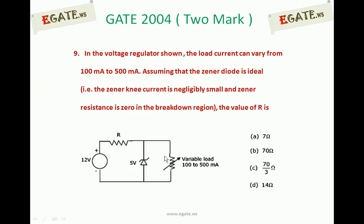Zener diode voltage is 5 volts. It was given in the diagram, not in the question. The options are: A. 7 ohms, B. 70 ohms, C. 70 by 3 ohms, D. 14 ohms.